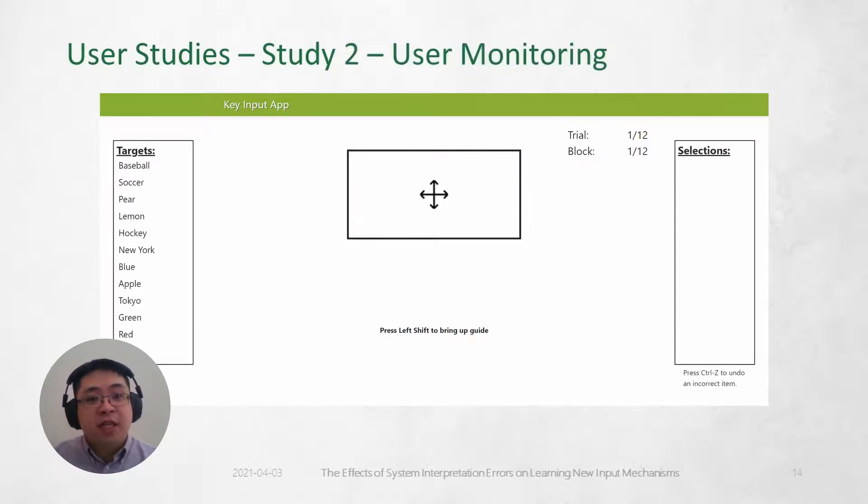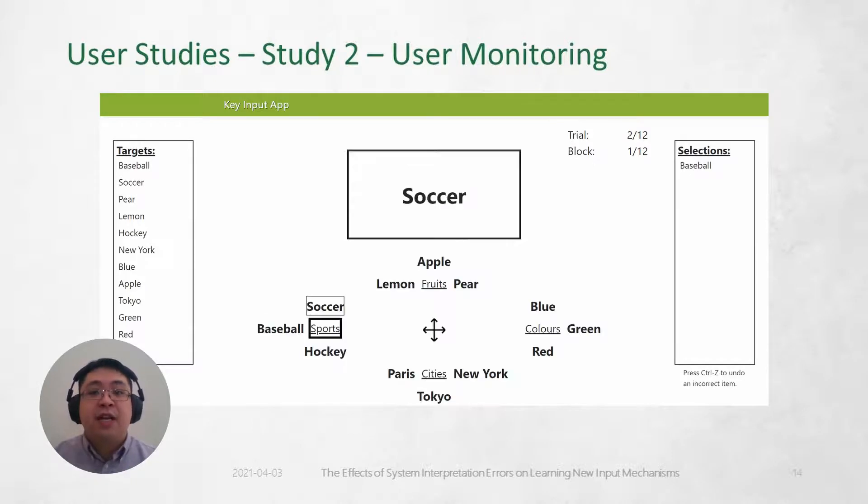In study two, each participant had to monitor the system's interpretation to make sure that the output matched the item they selected. If an incorrect item was selected, they would need to manually clear the wrong item before attempting the task again.